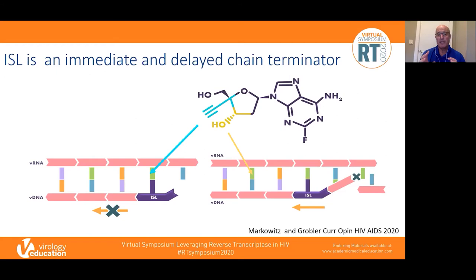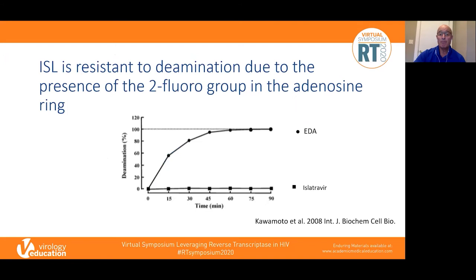There's also a fluoride group that's very important for this drug. The presence of that fluoride group makes Islatravir relatively resistant to deamination by adenosine deaminase. A paper from 2008 shows that over 90 minutes, EFDA — which lacks the fluorine — is rapidly deaminated, whereas Islatravir is relatively resistant to deamination.